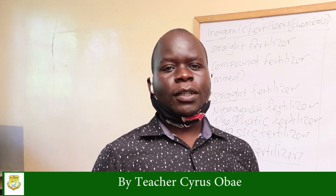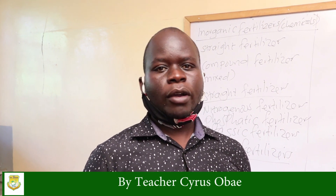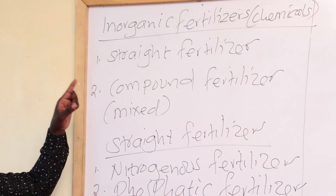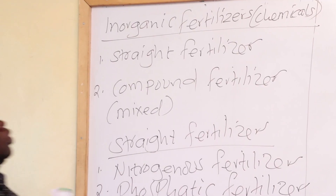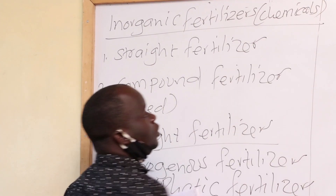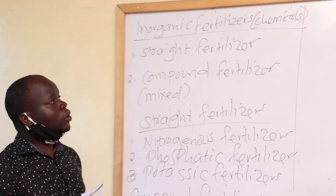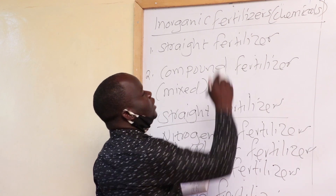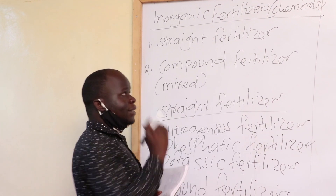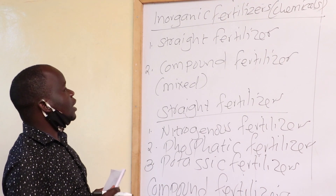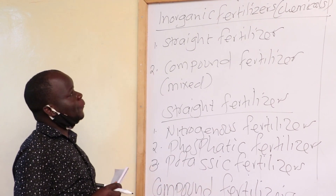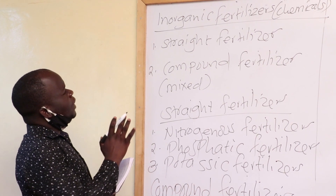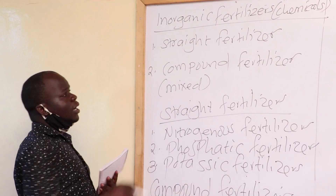My dear learners and viewers, welcome to lesson 2, science class 7, soil — inorganic fertilizers. Inorganic fertilizers, you can also call them chemicals. They are chemicals because they must be prepared in factories for us to purchase them and then we use them as fertilizers. So we have two types of inorganic fertilizers.